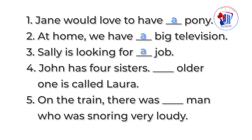Number four: "John has four sisters. ___ older one is called Laura." Esta oración significa: John tiene cuatro hermanas, la mayor se llama Laura. En inglés, sabemos que el artículo definido THE se puede usar como la, el, los y las. En este sentido, necesitamos usarlo para referirnos a la hermana mayor. Entonces la respuesta sería: John has four sisters. The older one is called Laura.